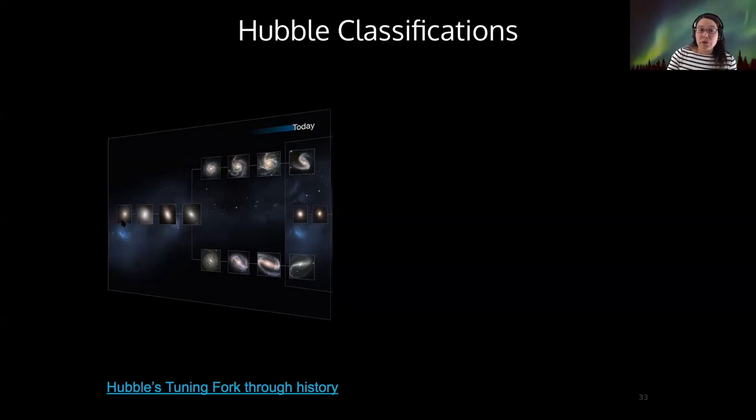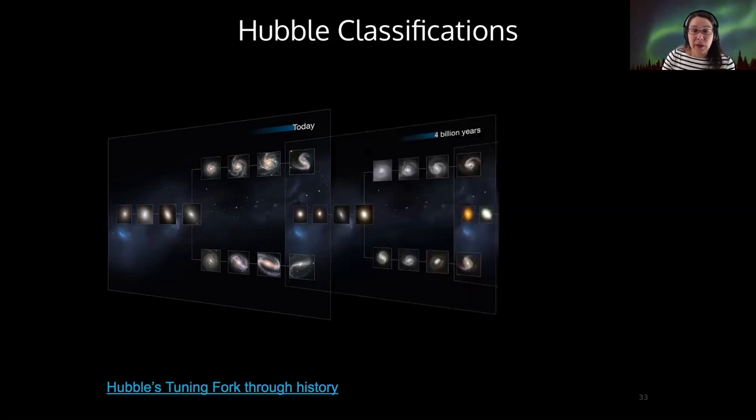If it was true that elliptical galaxies turned into spiral galaxies over time, then we would expect to see lots of spirals today and fewer spirals in the past. But we can look back through time, and 4 billion years back, we can see spirals, barred spirals, and ellipticals.